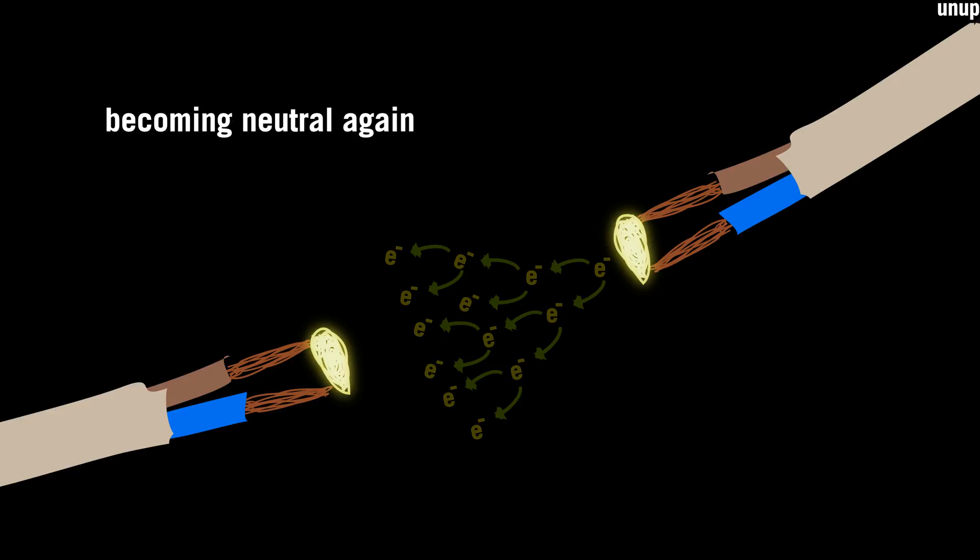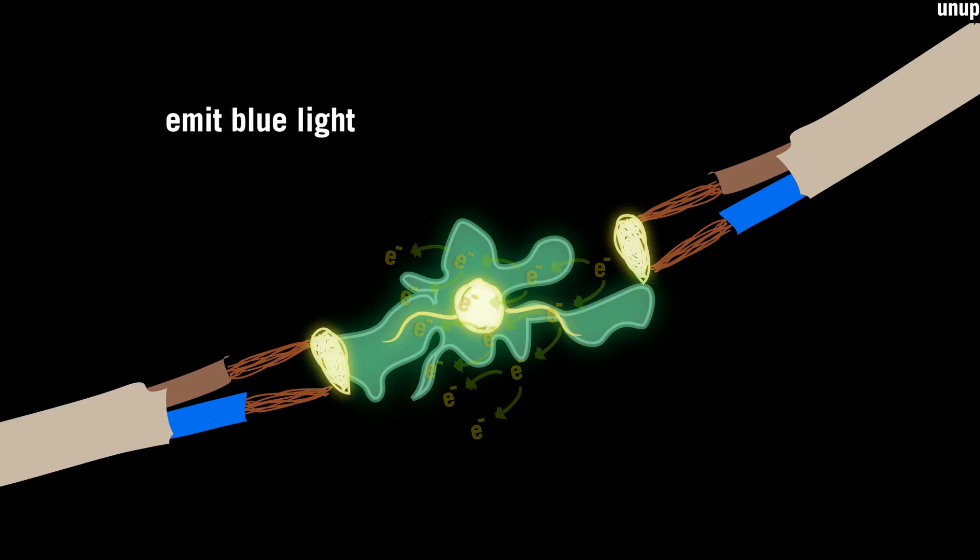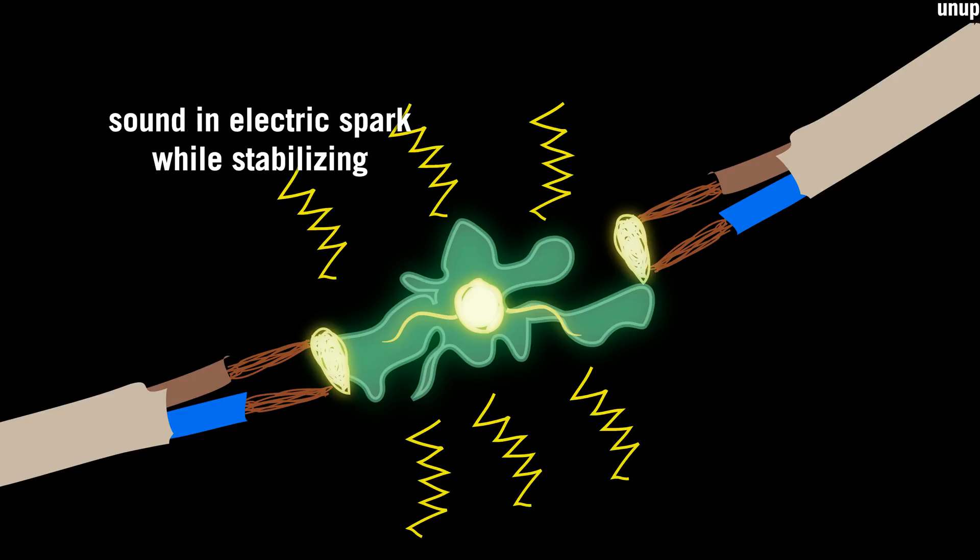When these high energy ions slow down, becoming neutral again, they emit blue light which we see in the electric spark. The sound in the electric spark is due to the pressure wave which they create while stabilizing.